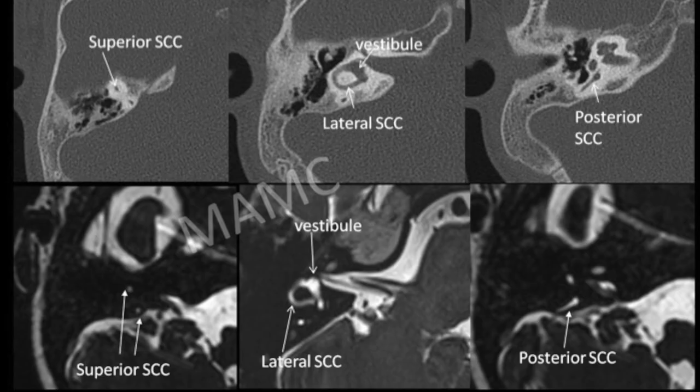Axial sections of the vestibule and semicircular canals: the top three images are axial CT images and the lower three are axial MR images. We can see the superior semicircular canal with its two limbs on the topmost scan. On a slightly inferior scan we see the vestibule and the lateral semicircular canal entering the vestibule, and on a further inferior section we can also see one limb of the posterior semicircular canal.